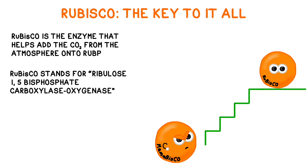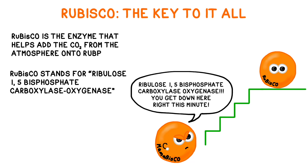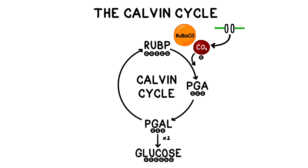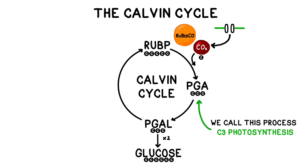Rubisco's full name is ribulose-1,5-bisphosphate-carboxylase-oxygenase, so you can see why most folks use its nickname. The one-carbon carbon dioxide combines with a five-carbon molecule called RuBP, and after a few intermediate steps, it ultimately forms two three-carbon molecules called PGA. The PGA combines with a few other key reagents to form PGAL, also called GALP in some parts of the world. We then siphon off a couple of them to make into glucose, and the remaining PGAL are reinvested into the Calvin cycle to keep it turning. PGA, with its three carbons, is why this standard photosynthesis process is called C3.